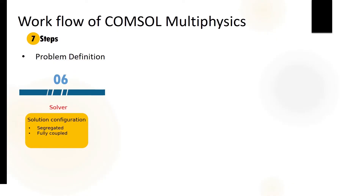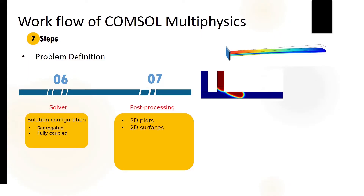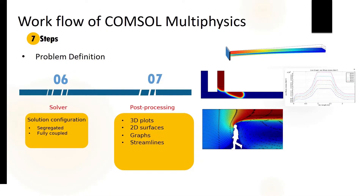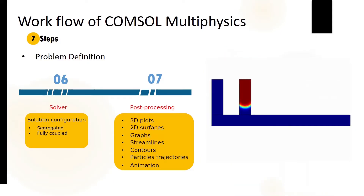Once the problem is solved, you need to post-process the data. For post-processing we have different options in COMSOL: 3D plots, 2D surface plots, line graphs, streamlines — for example, showing airflow over a model — contour plots, and particle trajectory plots. The final amazing feature is animation: you can generate animations and export them in GIF, MP4, or AVI format. That covers all the steps required to solve a problem in COMSOL Multiphysics.